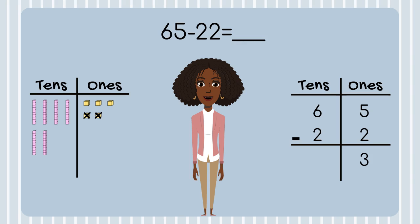Now let's subtract our tens place. How many tens do we need to take away? 2. You count as I take away 2 tens. How many tens are left? 4. What is 65 minus 22? That's right — 43.